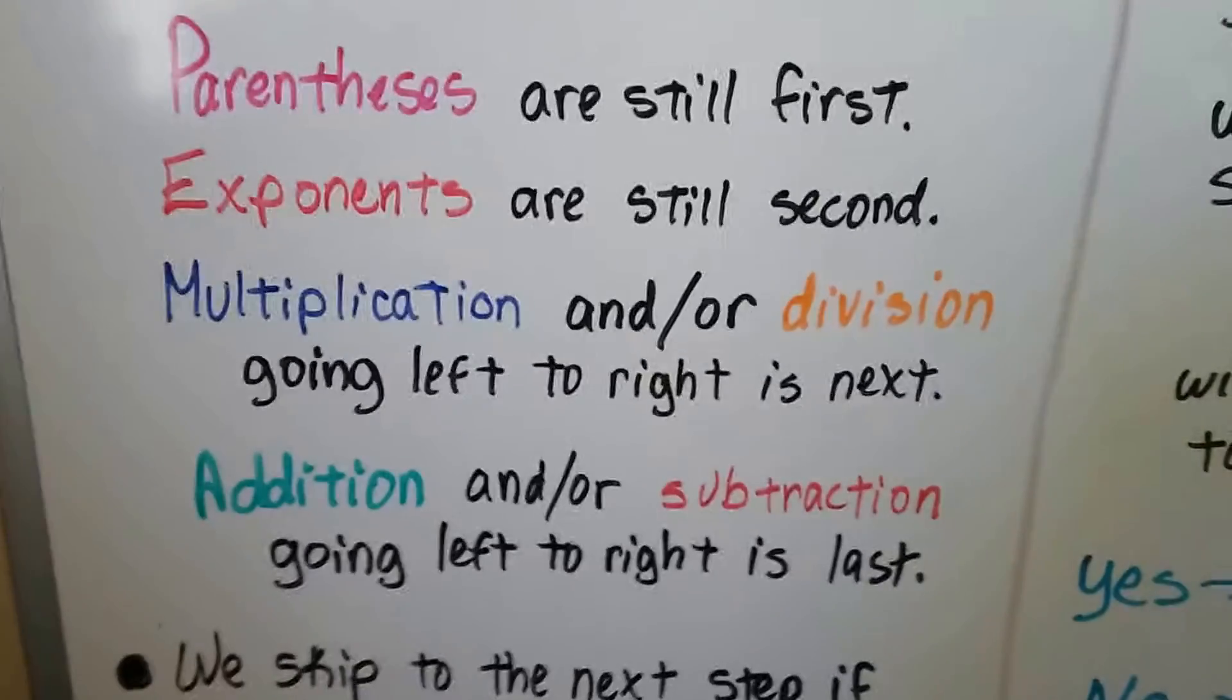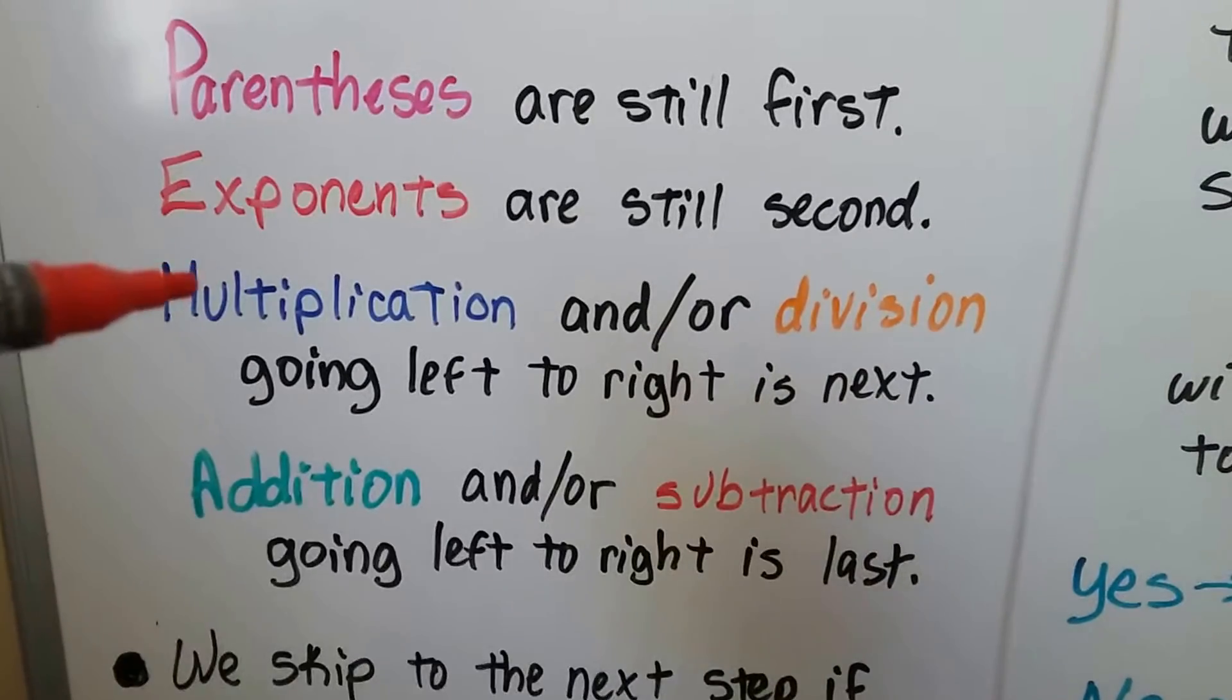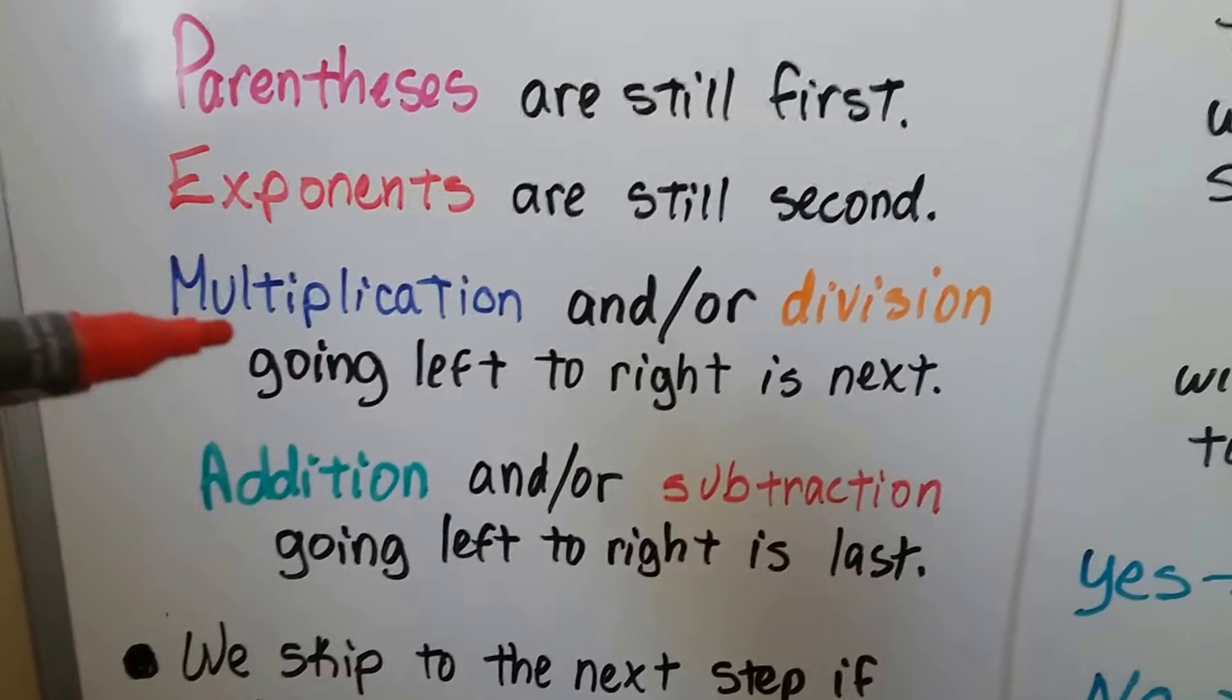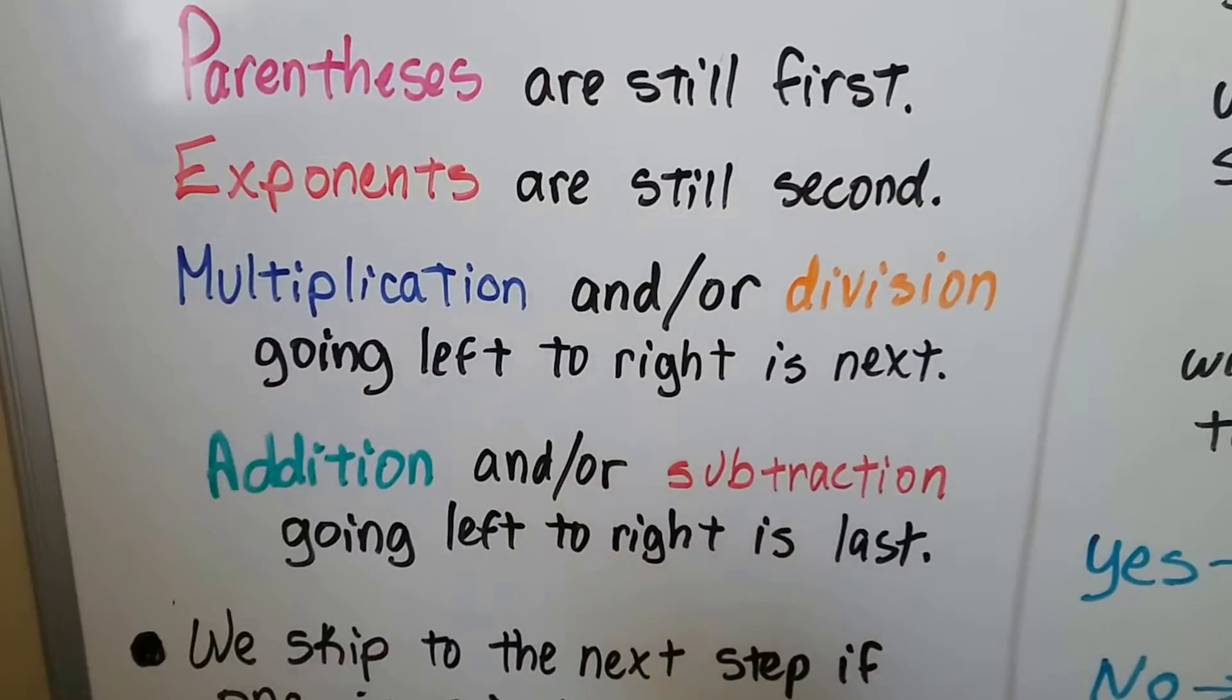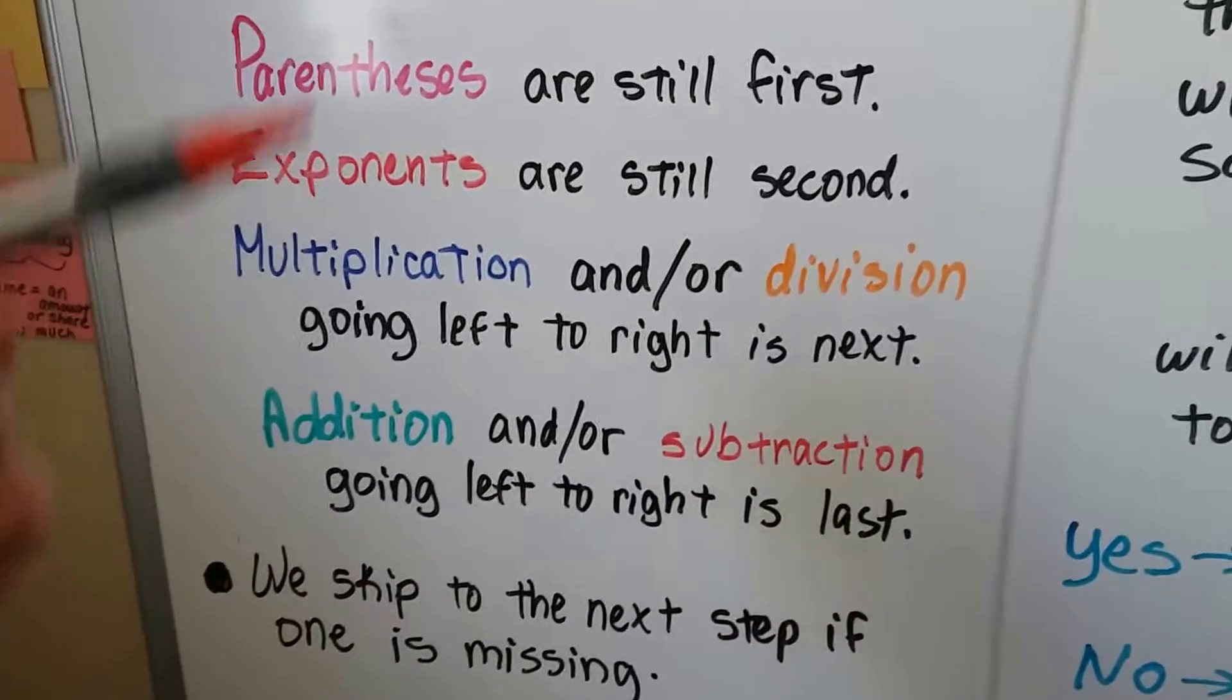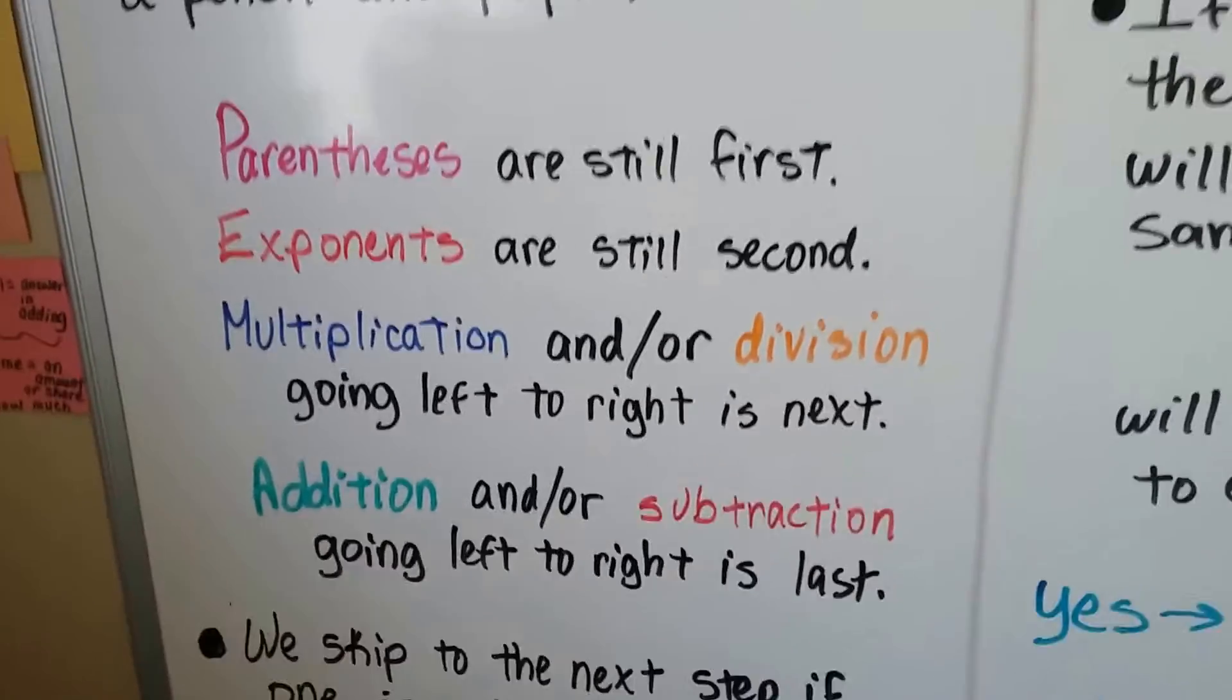So if we're doing a problem and there's no parentheses or exponents, we go straight to the multiplication or division going left to right, whichever is on the left we start with. If it's not there, skip it. But it's the same thing when we use a calculator.